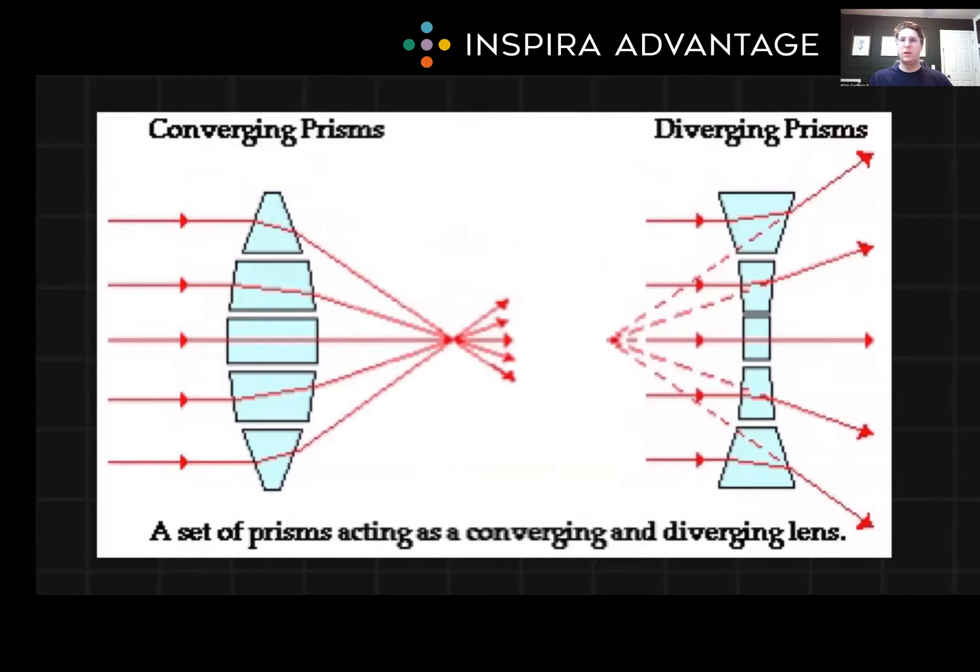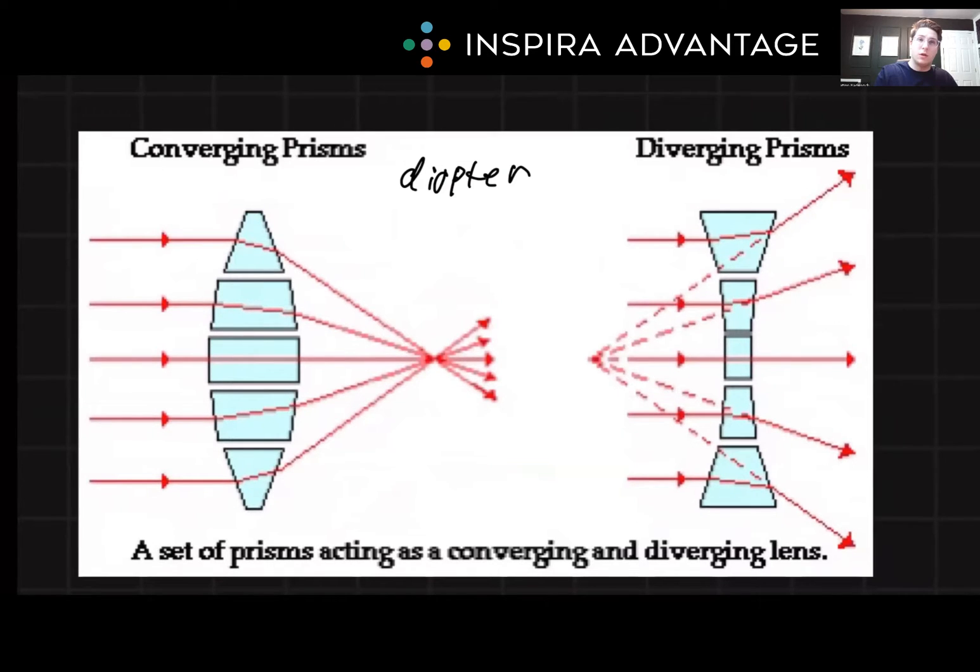Lenses are curved optical devices that refract or bend light. They're characterized by their shape and the way they converge or diverge light. The strength of the lens is measured in something called a diopter, which is calculated as P equals 1 over F, where F is the focal length of the lens.